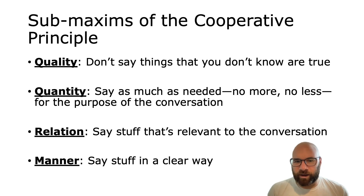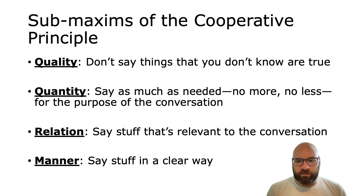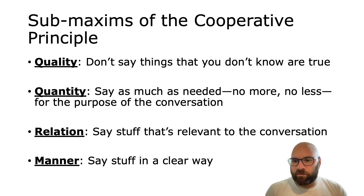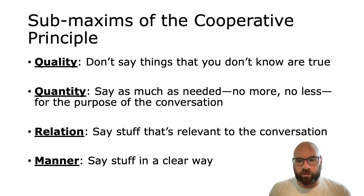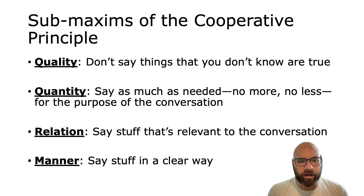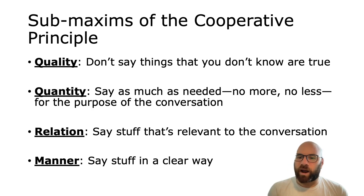In reality, people don't always talk like this all the time. You can probably imagine a lot of cases where people say things in a convoluted way, or people leave something out instead of saying everything they should say. Any of these maxims can be violated, but the idea of the cooperative principle is that we normally assume people are cooperating unless we have reason to believe otherwise. So if we see someone appear to break one of these maxims, we will try to find a way to reinterpret what they're saying to make it fit.